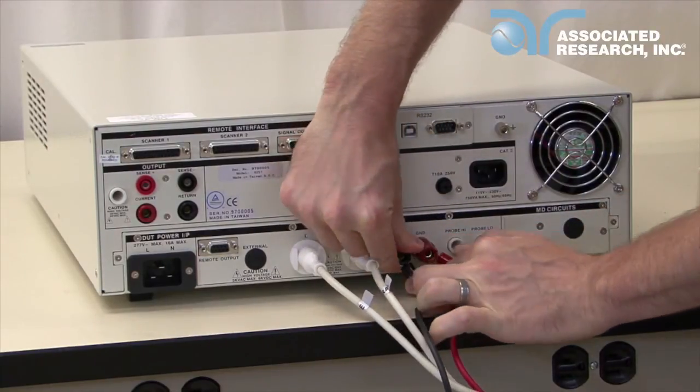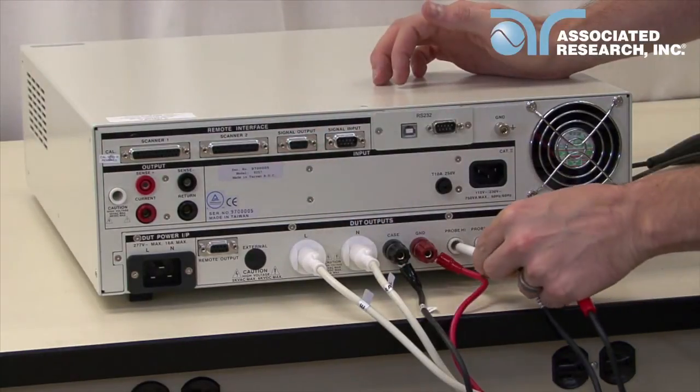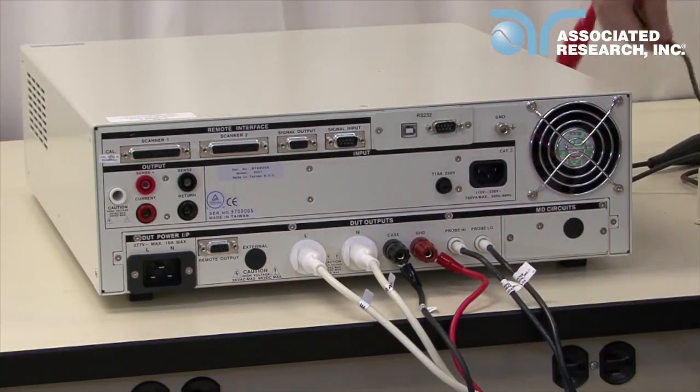If you're running line leakage tests that require the use of probing points, connect the two high voltage leads to the probe high and probe low terminals on the rear panel of the Omnia.